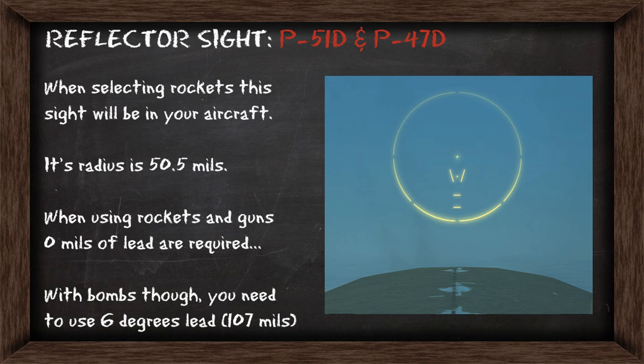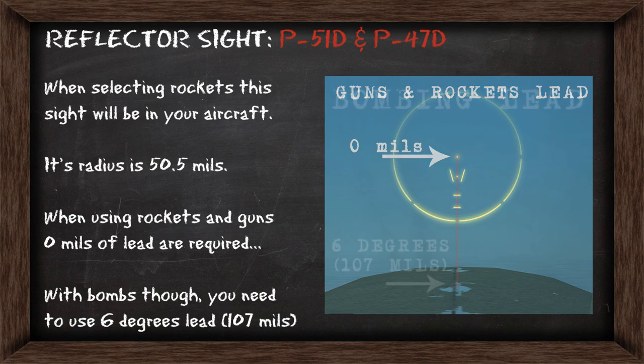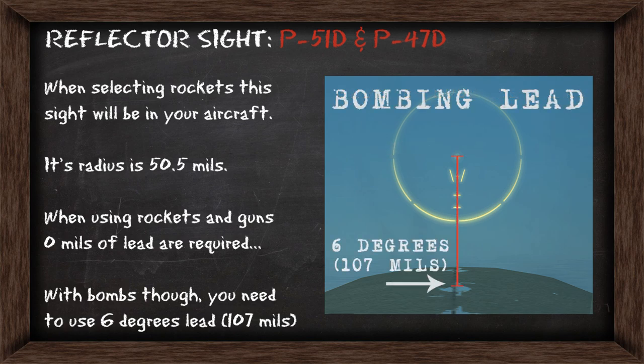If you're in the P-51D or P-47D and selecting rockets, this is the gun sight you'll see in your aircraft unless you take the gyroscopic sight. Its radius is 50.5mm. When using rockets and guns, you're going to have 0mm of lead, but if you're using bombs, you're going to need 6 degrees of lead, which is equal to 107mm, and I've marked that point on the nose as you can see in the picture.